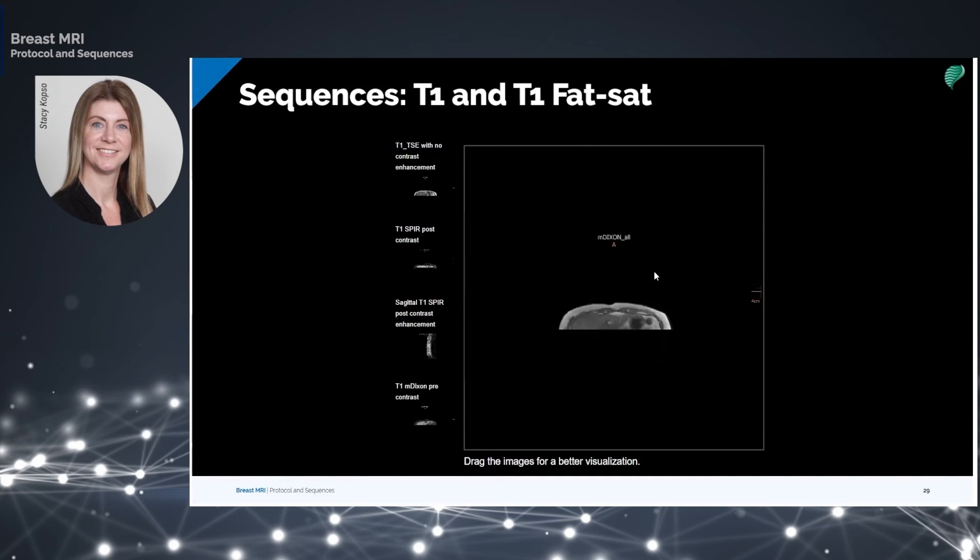A non-fat suppressed pre-contrast T1 demonstrates fat at hyperintensity. The normal fatty tissue, enlarged lymph nodes, and fatty lesions all appear hyperintense in a T1-weighted image. By canceling out the fat signal within the breast through fat suppression, the signal of fatty lesions should also get suppressed. This occurs in cases of hematomas, lipomas, and fat necrosis.